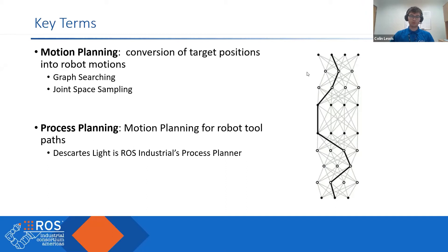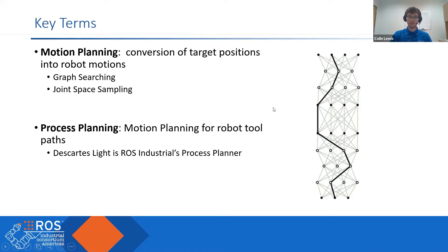Both free space and process planning involve graph searching and sampling your joint space, but they go about it differently. On the right here, we have a little ladder graph. This is what a process planner like Descartes uses, where each rung of the ladder corresponds to the joint samples generated from a given tool point. All of the nodes in this rung correspond to configurations that reach the same point in space. Our previous implementation of Descartes would construct this graph fully before it searched and found the optimal path.